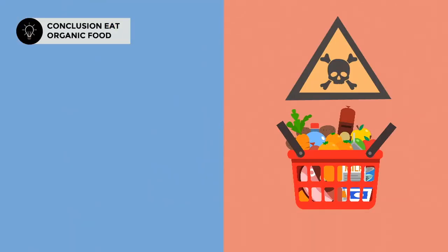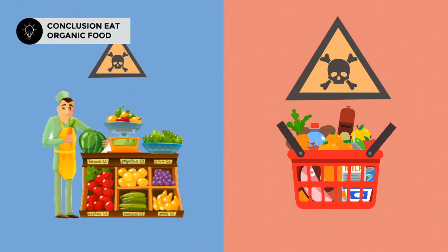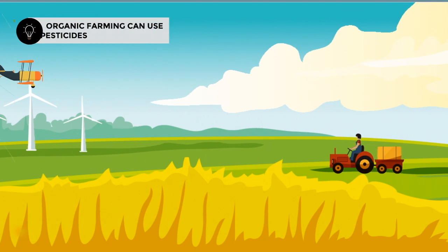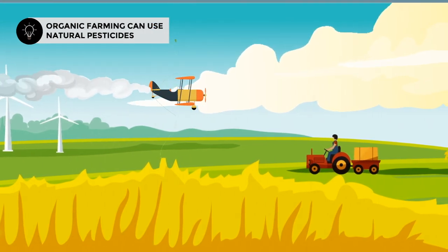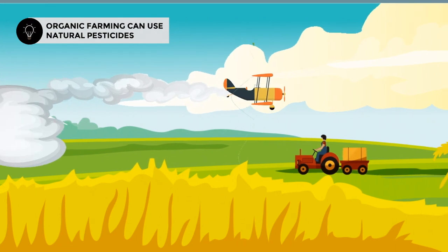However, it is interesting to note that the study showed pesticide residue present in the organic foods as well. How is that possible? This is because in organic farming pesticides are used as a last resort, they aren't actually forbidden.